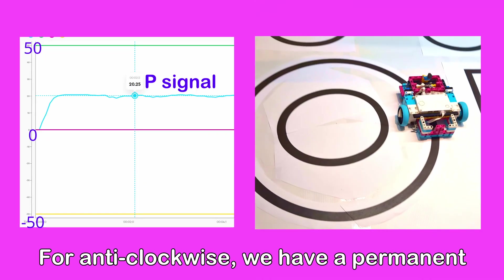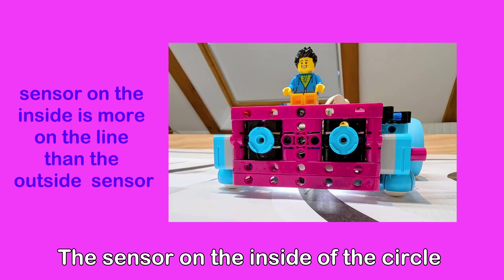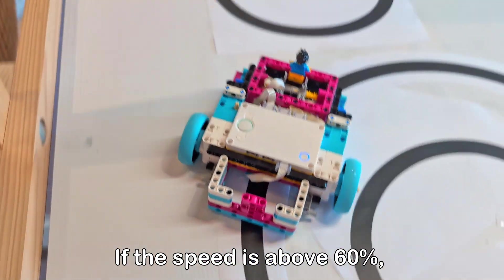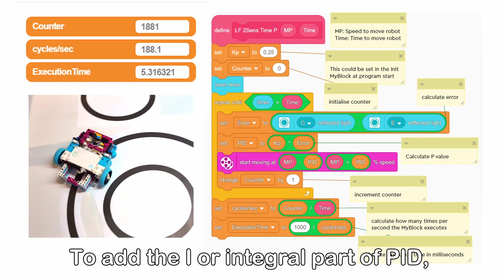While anti-clockwise, we have a permanent error in the other direction. The sensor on the inside of the circle is more on the line than the outer sensor. If the speed is above 60%, the robot cannot follow the circle.